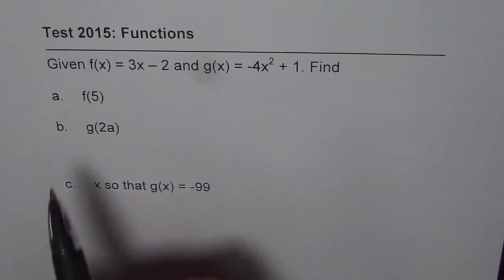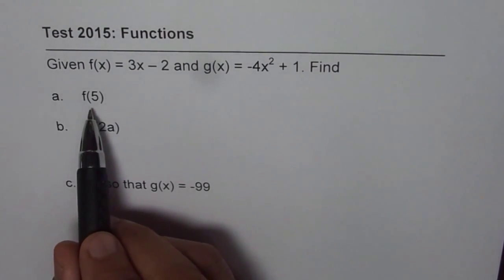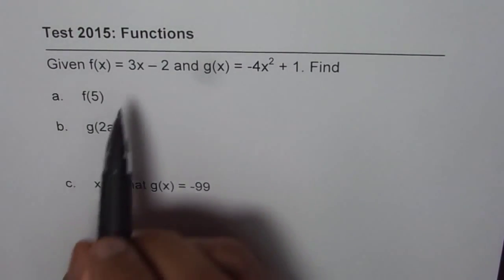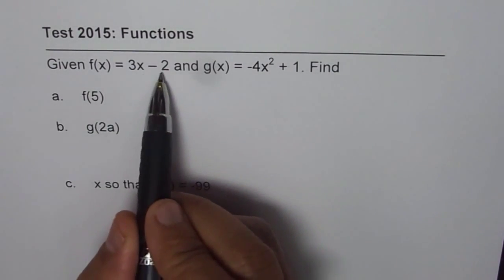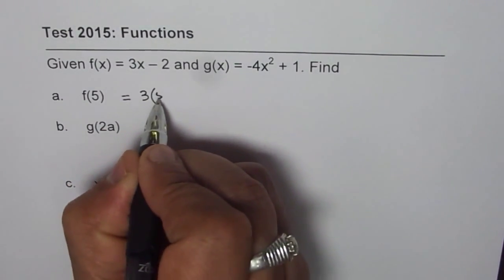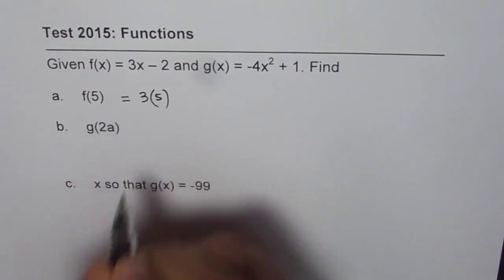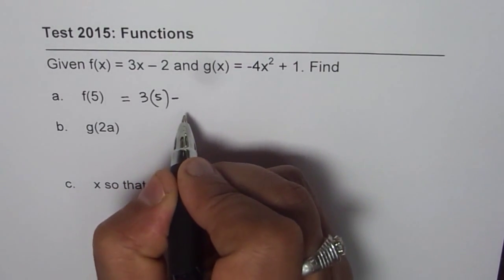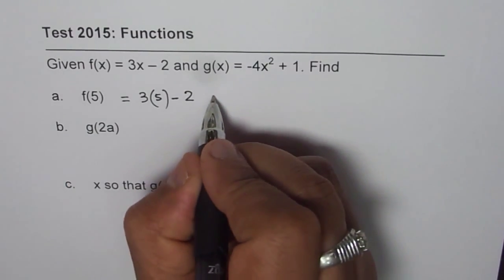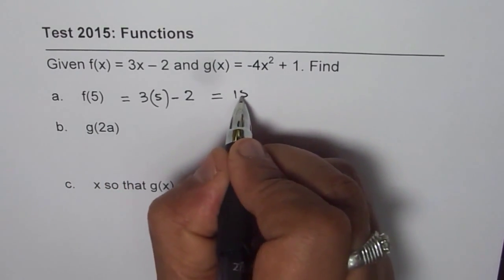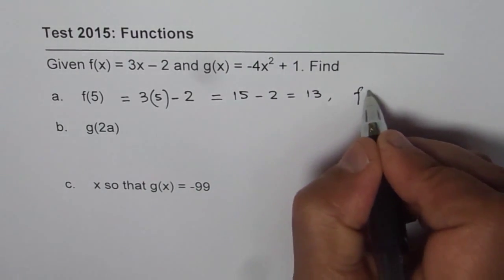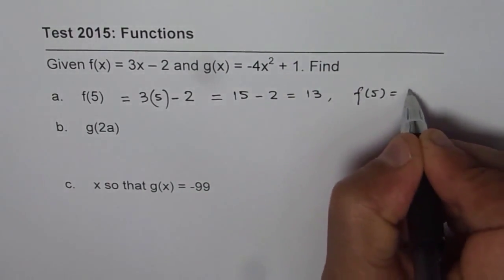Now f(5) really means evaluate the function when x is 5. So f(x) is given as 3x - 2. So f(5) equals 3 times 5. We need to find the value of the function when x is 5. That's what f(5) means. So 3 times 5 is 15, 15 minus 2 is 13, and therefore f(5) equals 13.